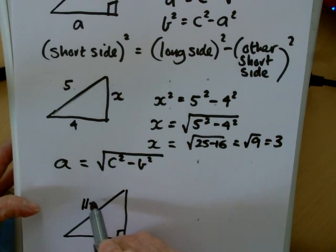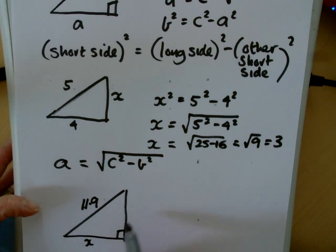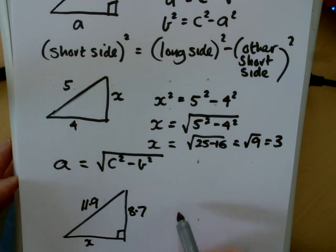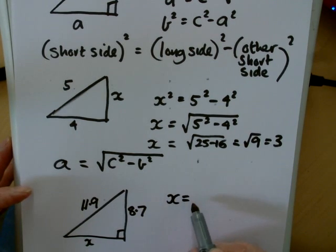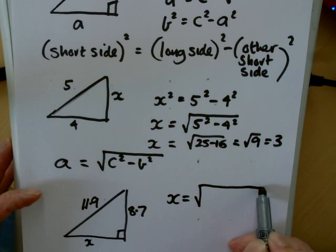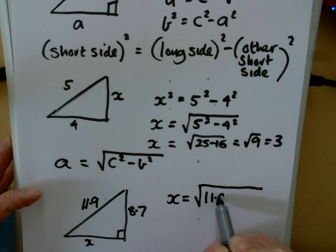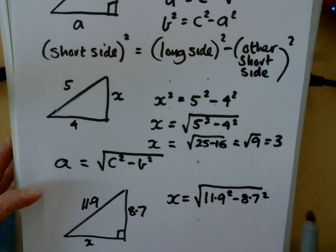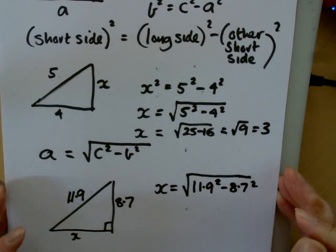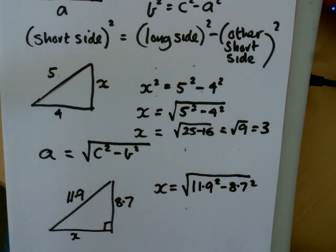So let's suppose we've got a long side of 11.9, and one of the short sides, let's call it over here, is 8.7. So x will equal the square root of the long side, 11.9 squared minus 8.7 squared. If you put these working outs in, you'll get lots of marks for that, and you'll only really lose a mark if you press your buttons in an incorrect way.